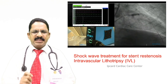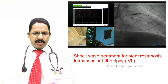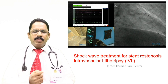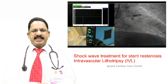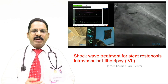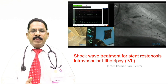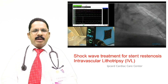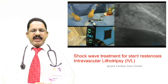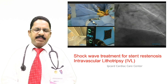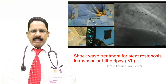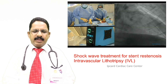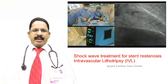When a stent gets blocked, some cardiologists prefer to place another stent inside the blocked stent, while others prefer simply dilating with a balloon. We have different types of balloons — non-compliant balloons, cutting balloons — and different types of atherectomy devices available. The recent advanced treatment for restenosis is called intravascular lithotripsy.